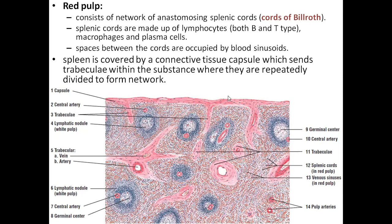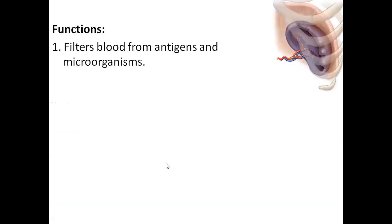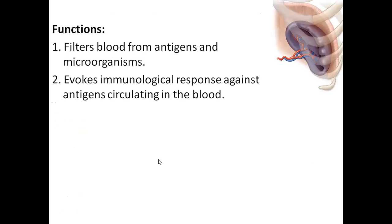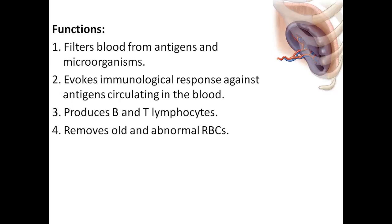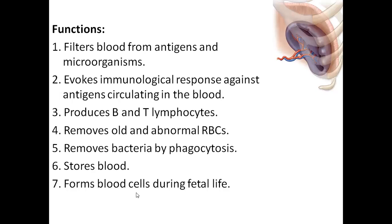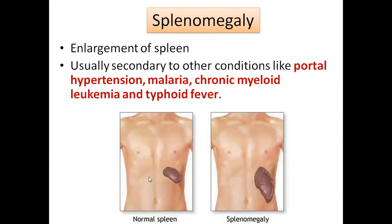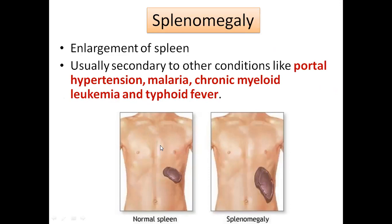The spleen is covered by a connective tissue capsule which sends trabeculae as partitions into the substance. Functions of the spleen: it filters blood from antigens and microorganisms; it evokes immunological response against antigens circulating in the blood; it produces B and T lymphocytes; it removes old and dead red blood cells; it removes bacteria by phagocytosis; it stores blood; and it forms blood cells during fetal life. Splenomegaly is enlargement of the spleen, usually secondary to portal hypertension, malaria, chronic myeloid leukemia, or typhoid fever.